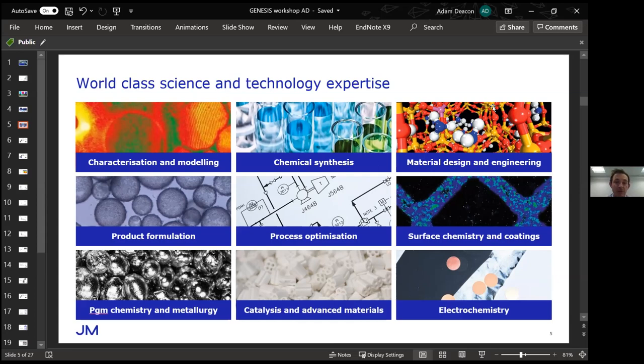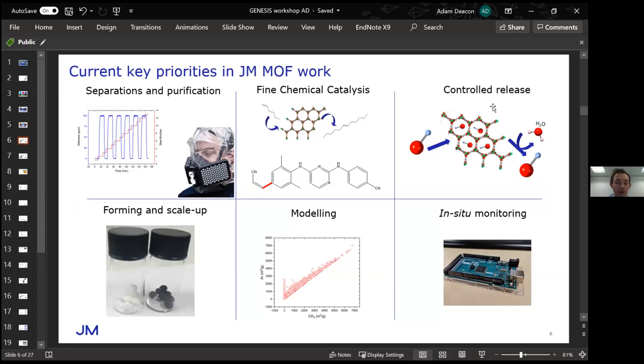We have six current priorities in MOF work at JM. Three application-based priorities: separations and purifications like CO2 capture, but also other processed gases and toxic gases. In addition, we're looking at fine chemical catalysis using MOFs and controlled release of materials from MOFs.